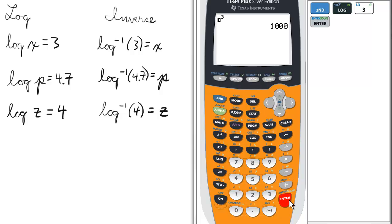So the inverse log of 3 equals 1,000, which means in this case x equals 1,000. In the next example, log p equals 4.7.